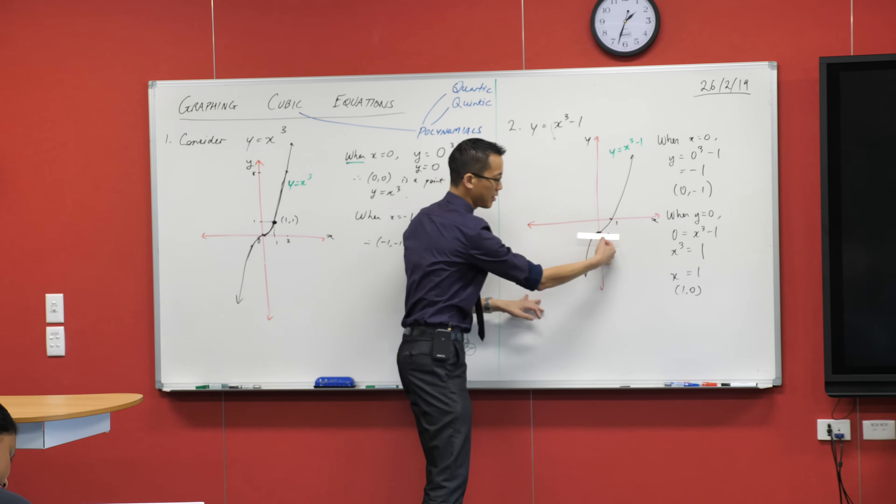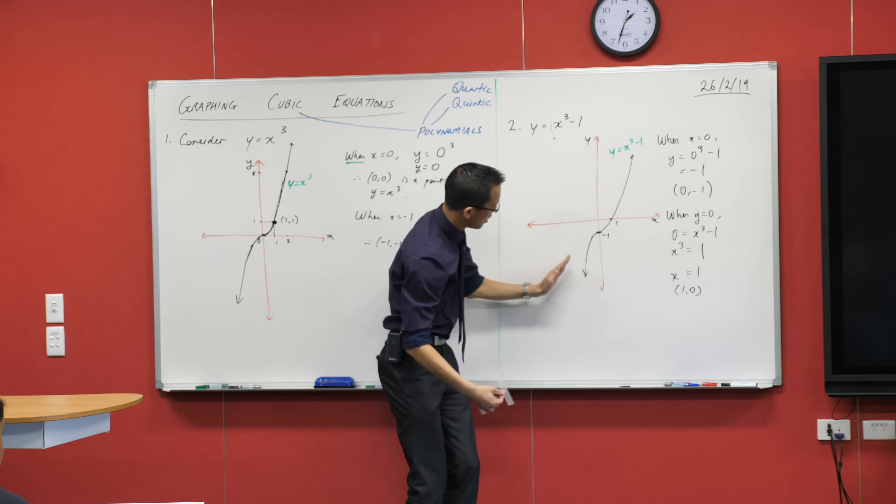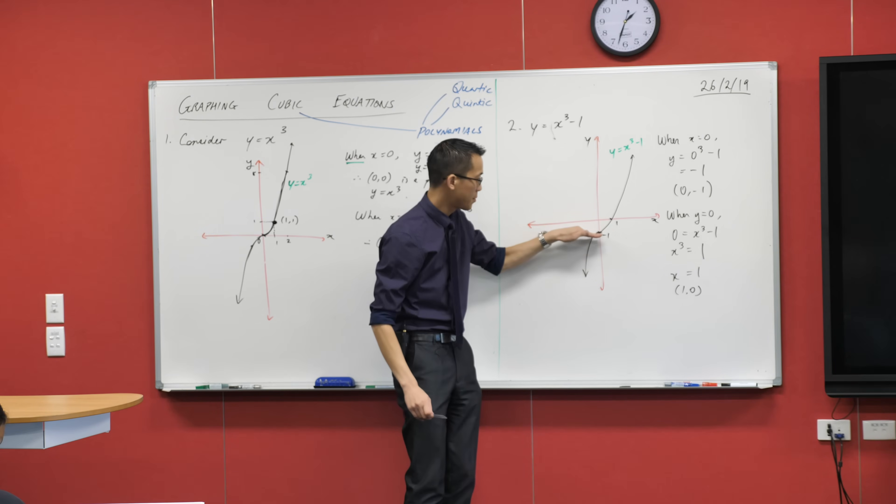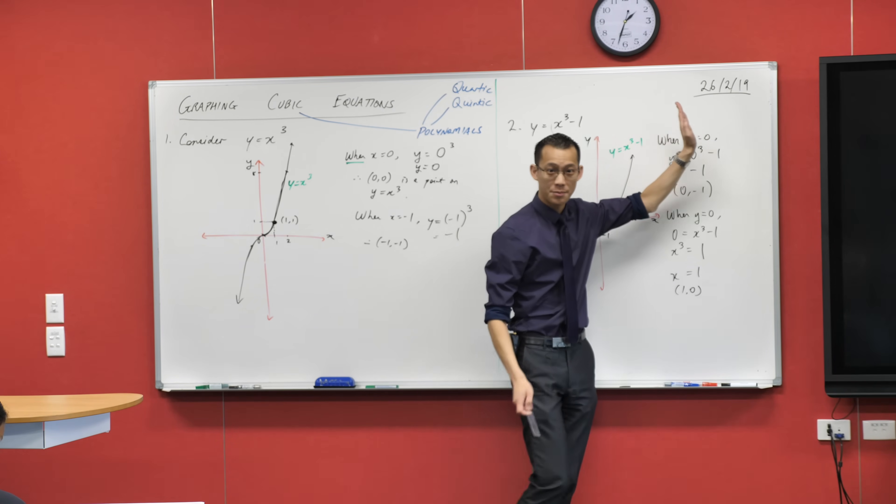In this case it actually happens to be the x-axis. Over here it's not the x-axis, it's this point here. It's kind of like the steepness of the graph kind of stops momentarily, stops and then it goes back up.